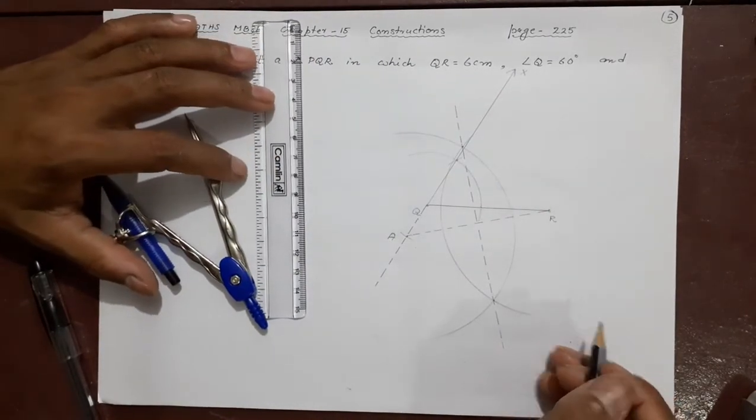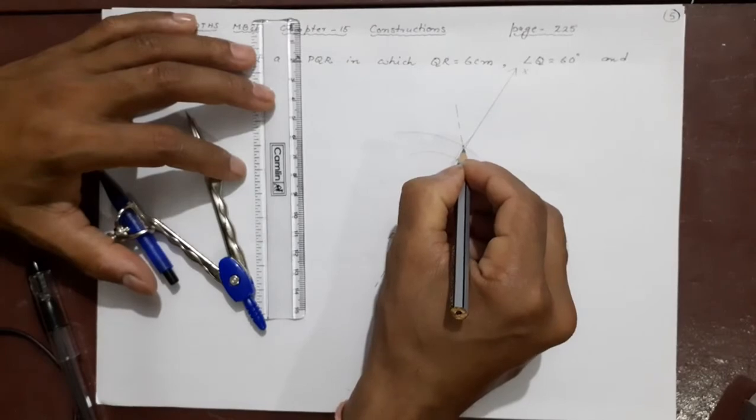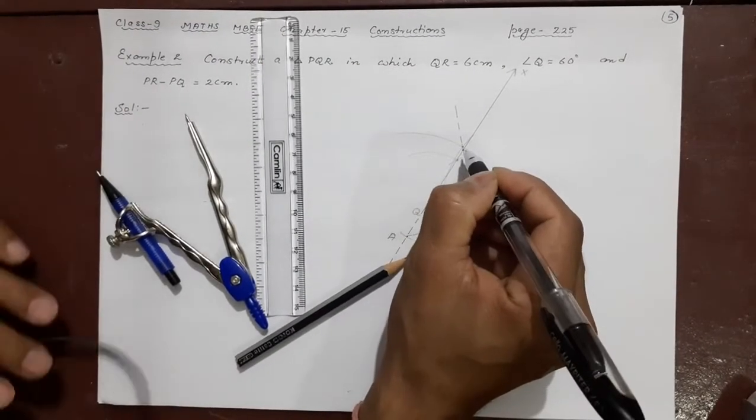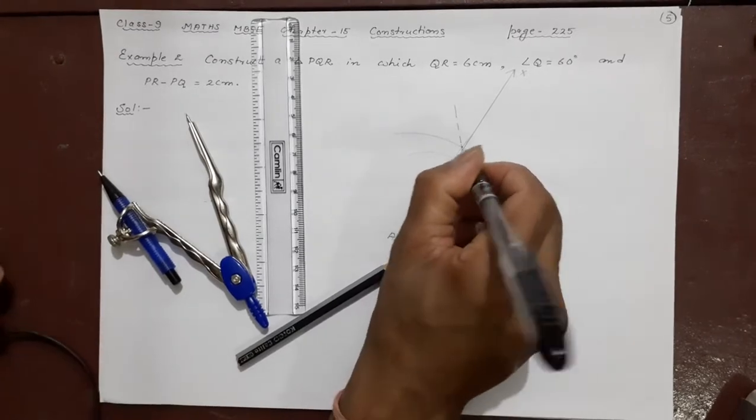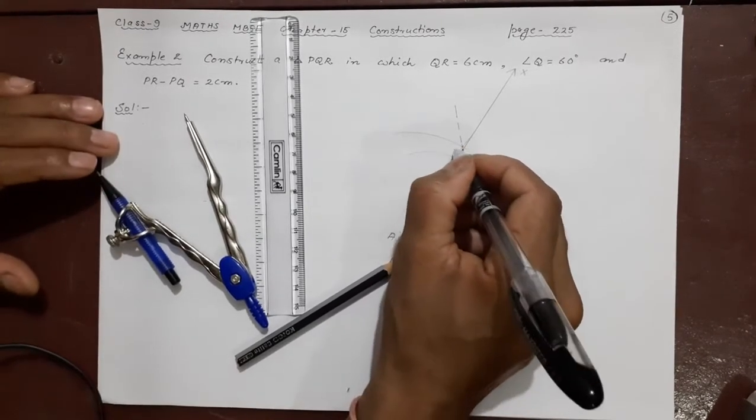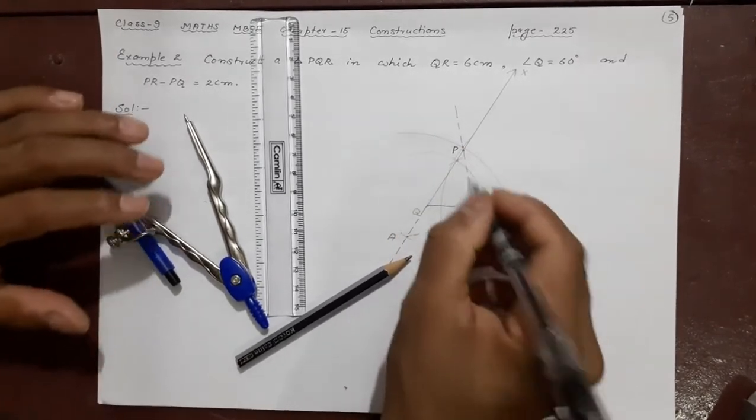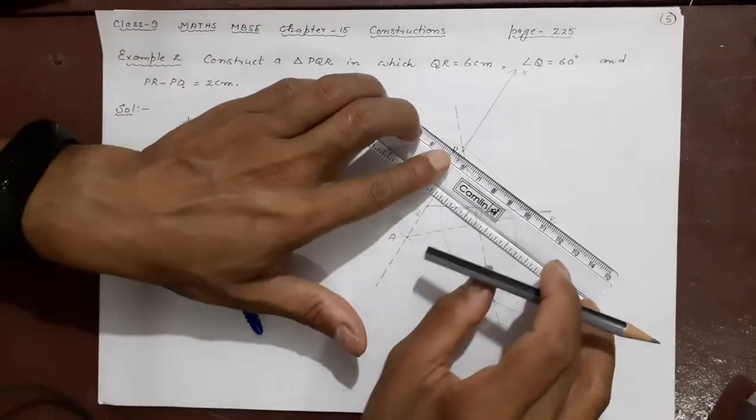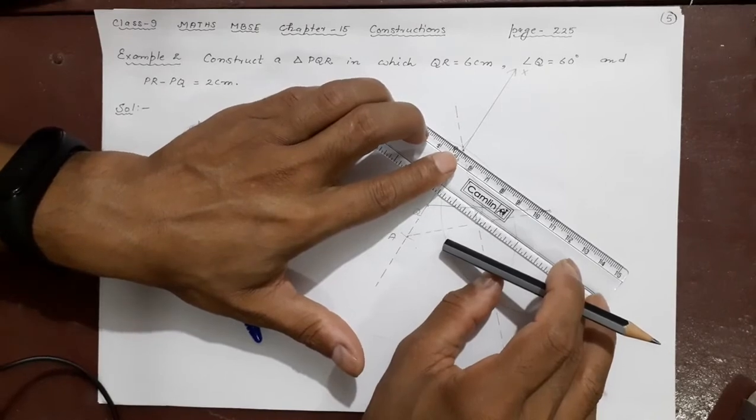So wherever they are cutting there that will be your C here. Very important. I want to mention with your pen this C here it is cutting. Not here. So this point will be your P. Why P not A? Because this triangle is PQR. So now once you finish this you are going to join this PR and your PQR triangle is ready.